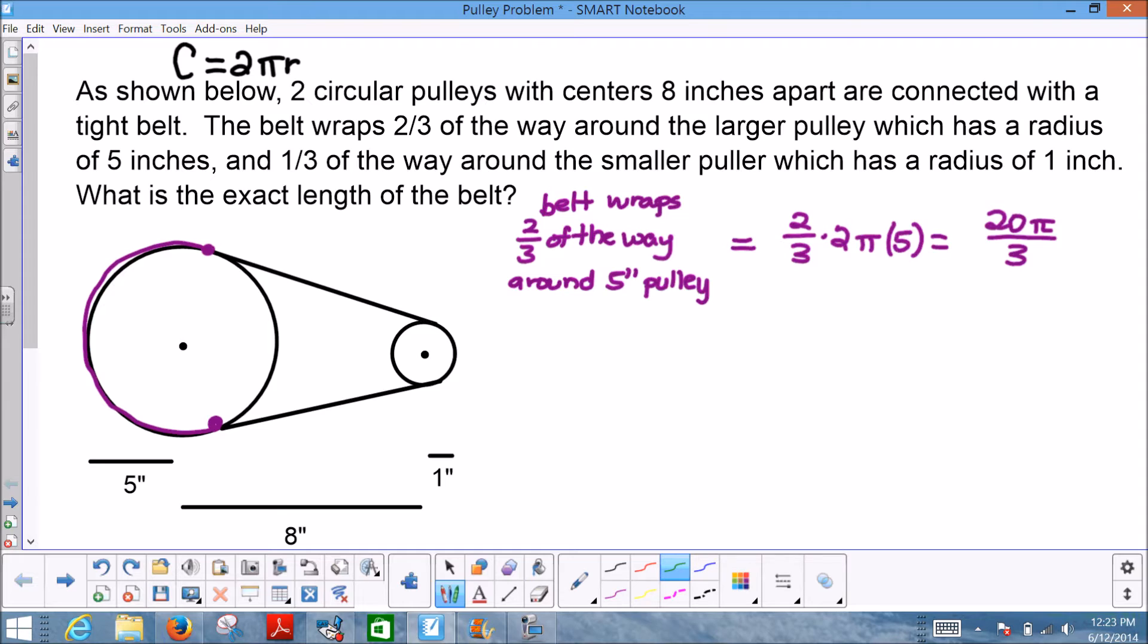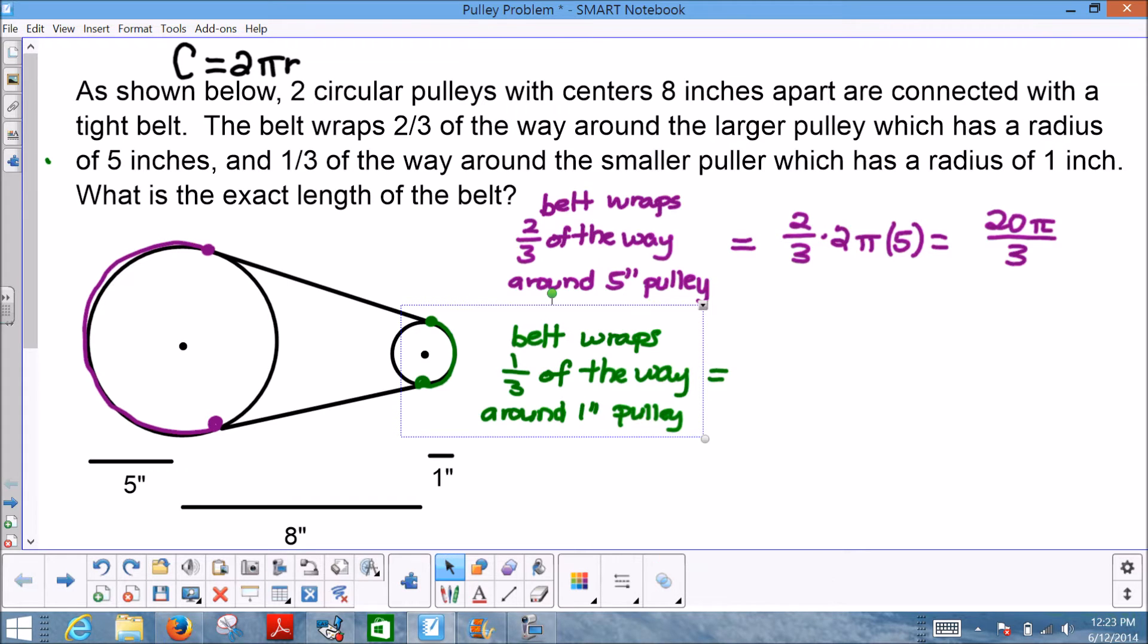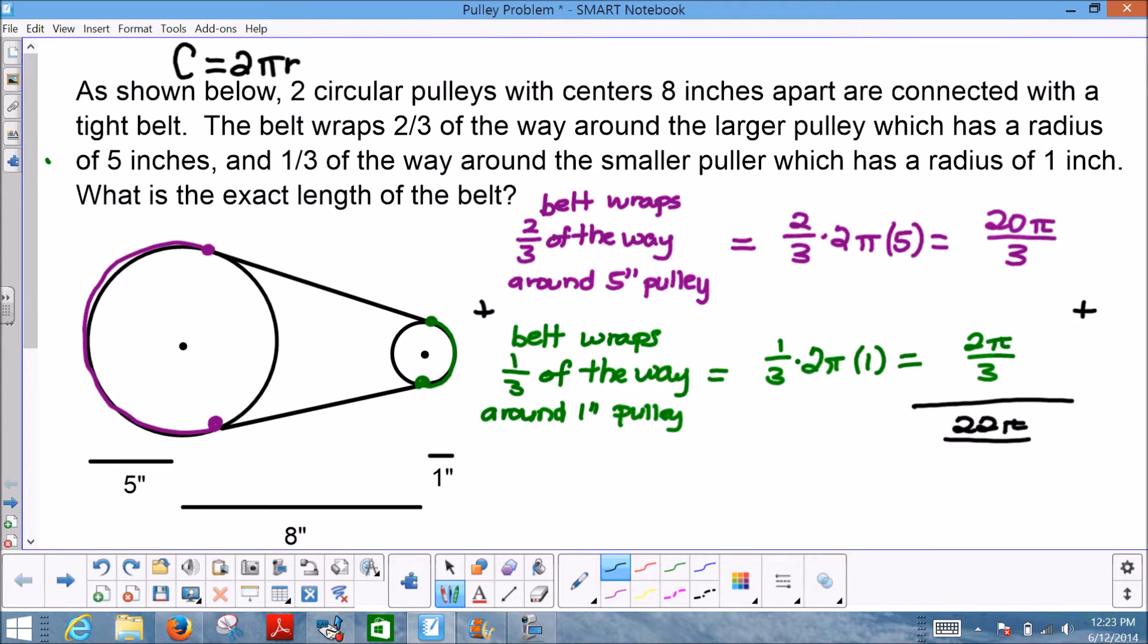In much the same way, here in green we're going to find the length around the smaller pulley. I'll describe that as the belt that wraps 1/3 of the way around the 1-inch pulley. That would be equivalent to 1/3 times 2π times a radius of 1, which would be 2π/3.